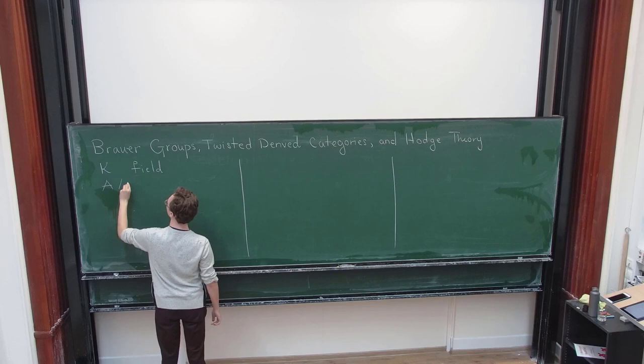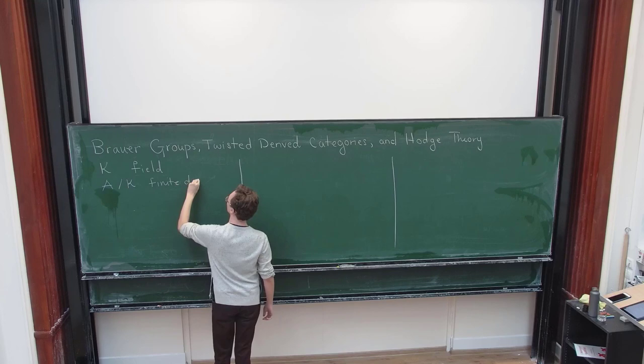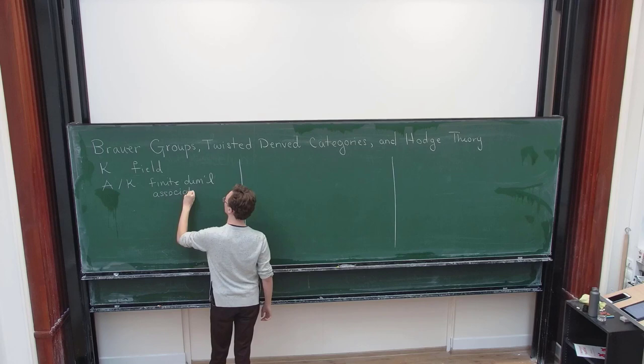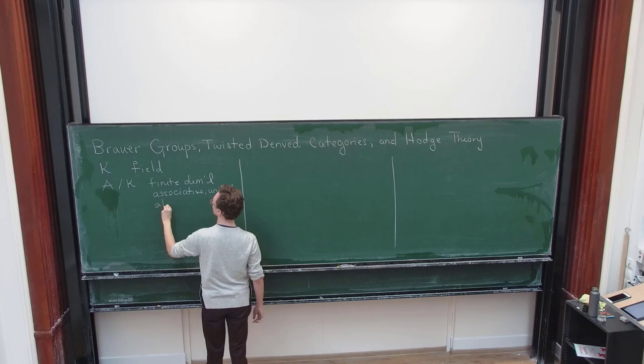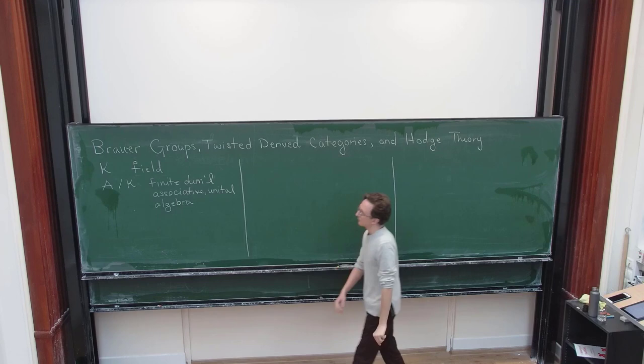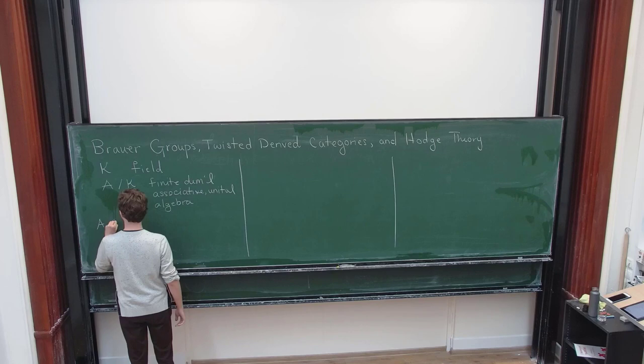And let's say that we have a finite dimensional associative unital algebra, potentially non-commutative.